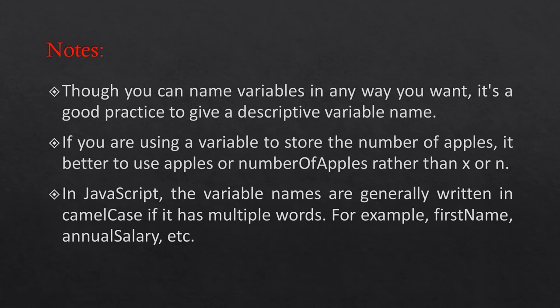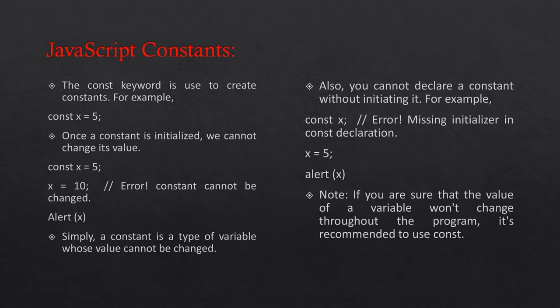In JavaScript, variable names are generally written in camelCase if they have multiple words — for example, firstName, annualSalary, etc. The const keyword is used to create constants. For example, const x = 5.